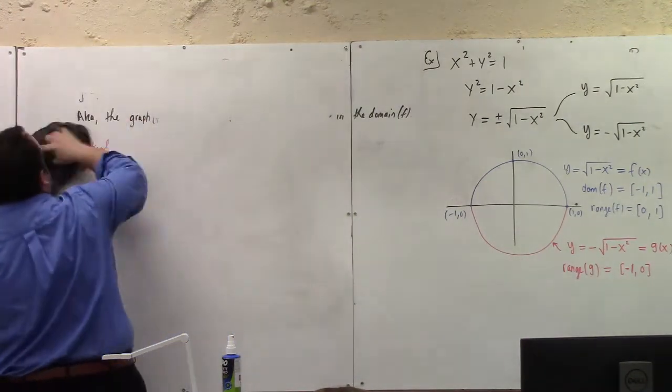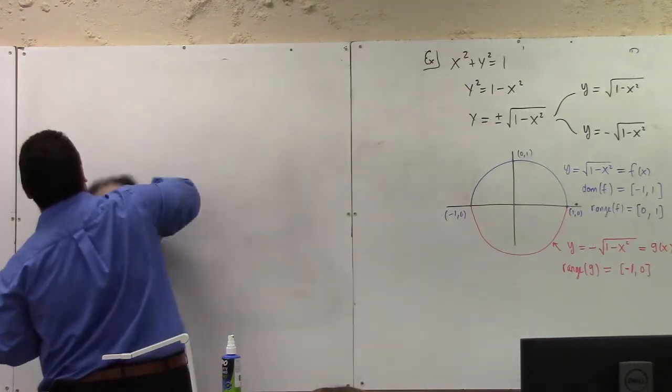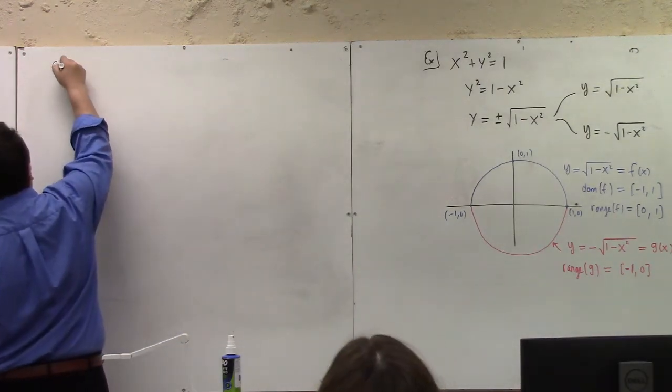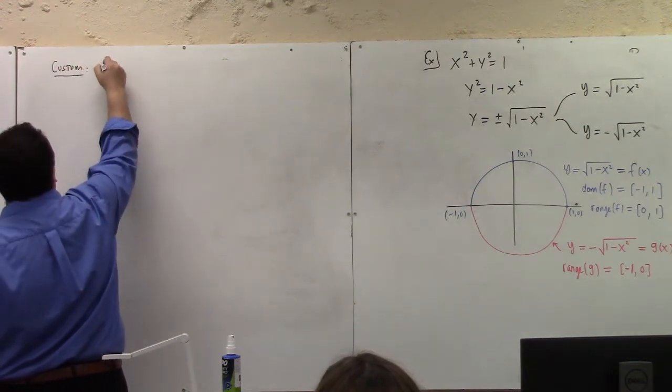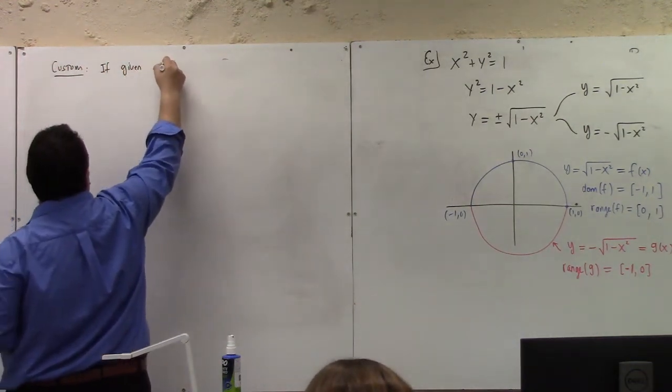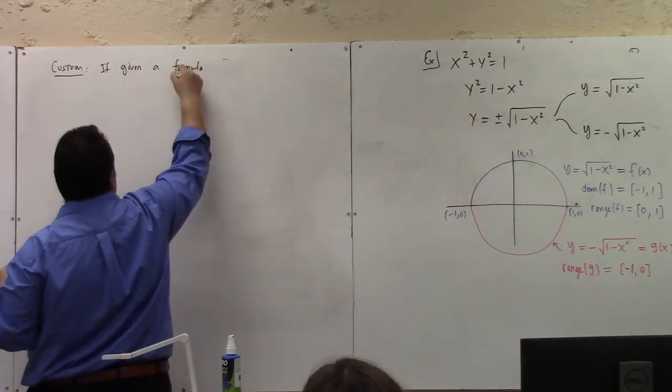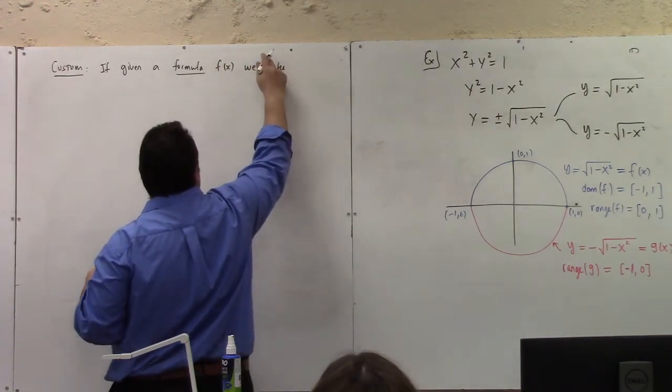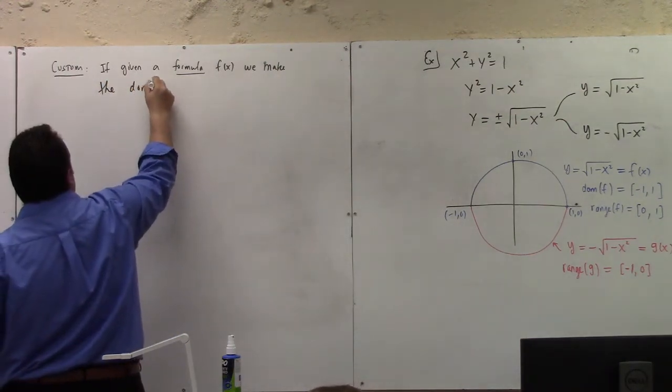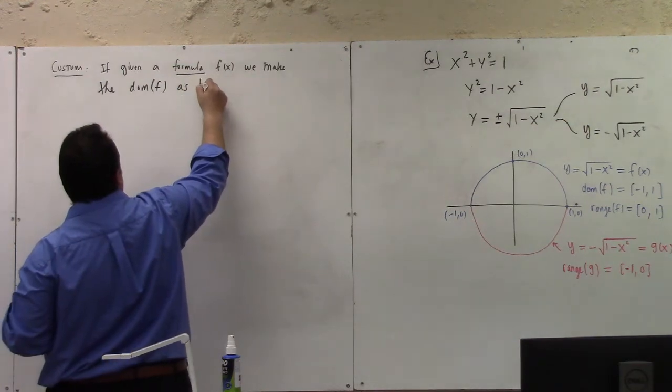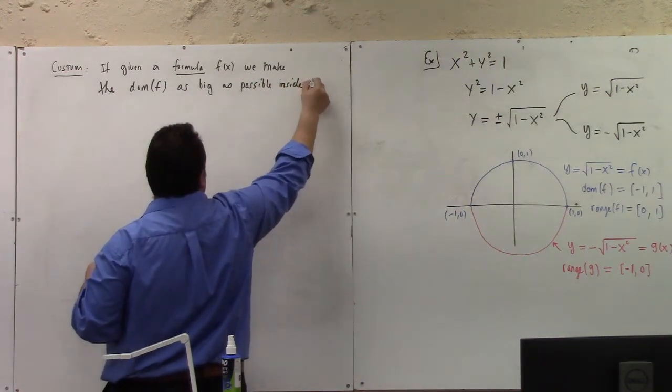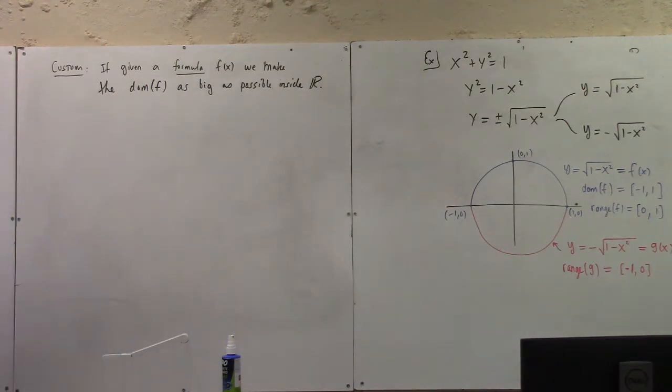Now, let's look at some kind of easier questions. Well, I don't know if they're easy or not, but they're a little bit different. So, let me share with you our custom. If given a formula f of x, we make the domain of f as big as possible inside the real numbers in our course. That is our, well, our ninja way, let's say.